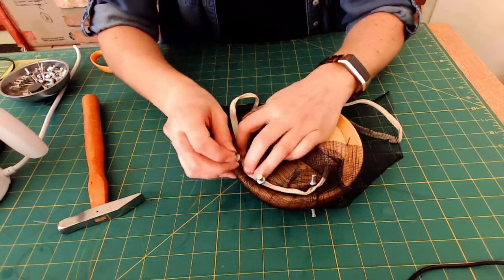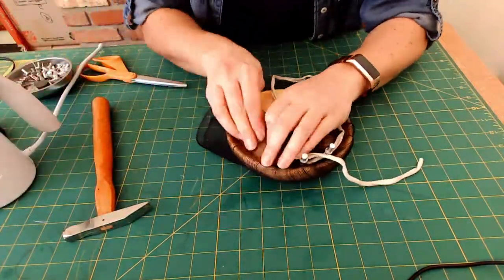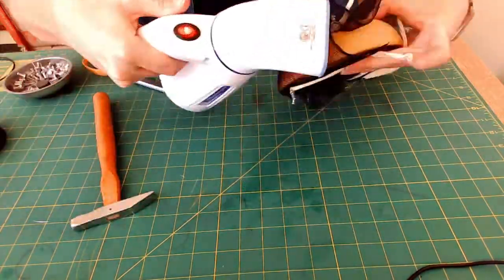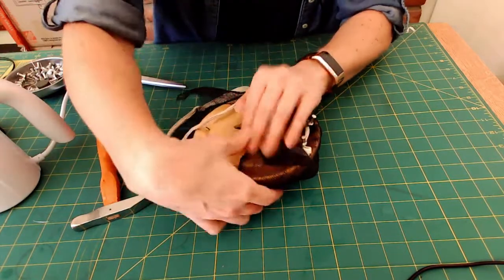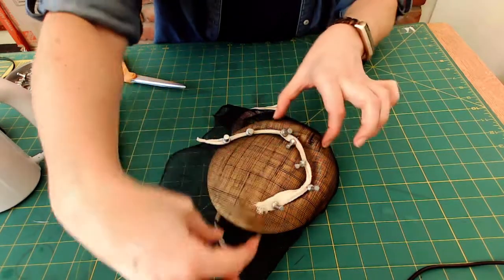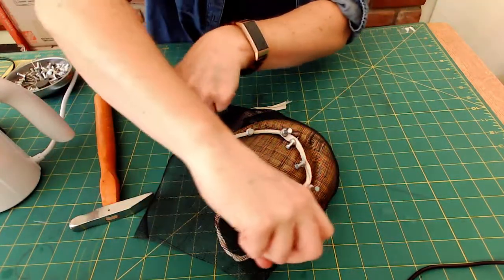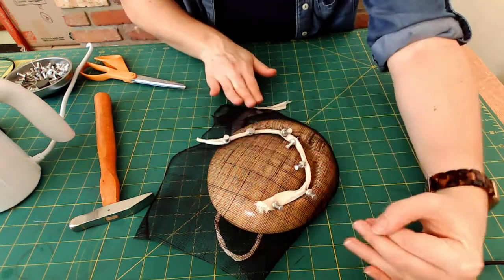And the steam allows you to kind of shape it. And you want to make sure as you're pulling that you're pulling straight out from the sides. Try not to just pull in one direction all the way around. You always want to kind of pull from the center out.